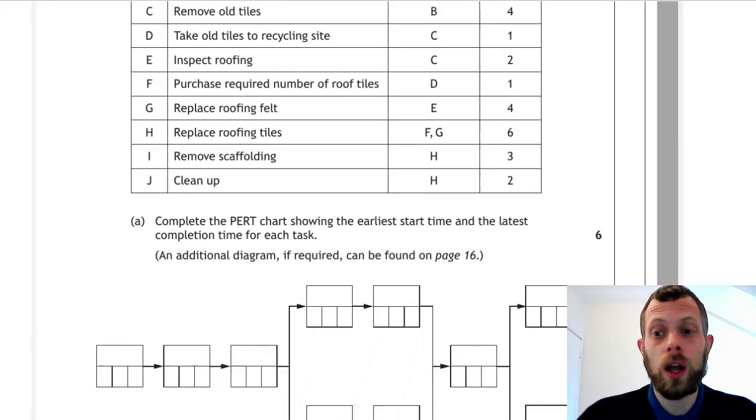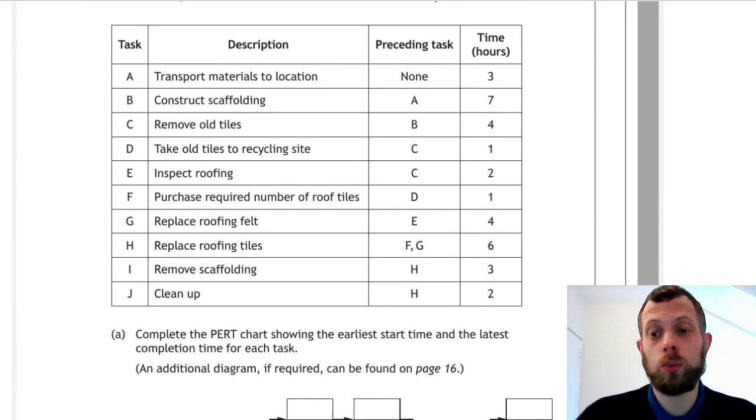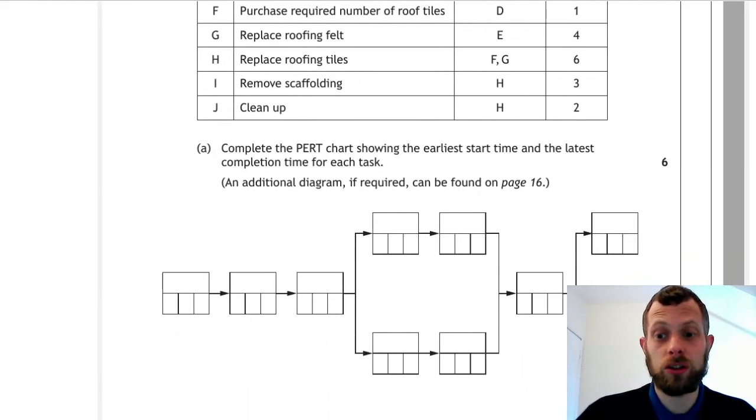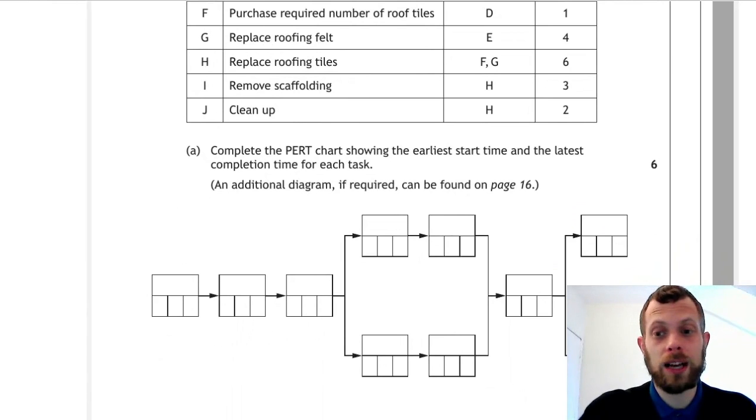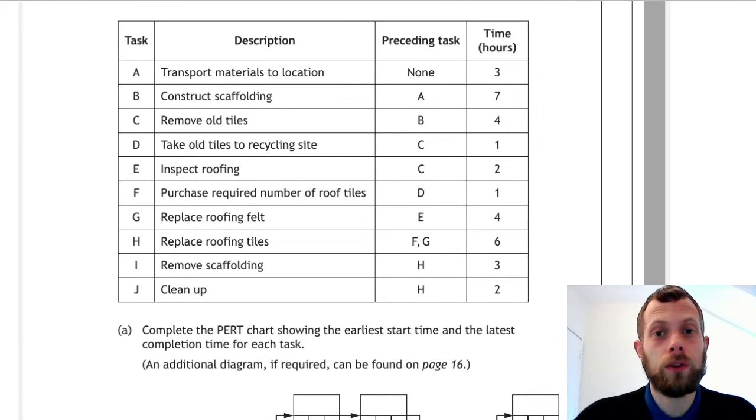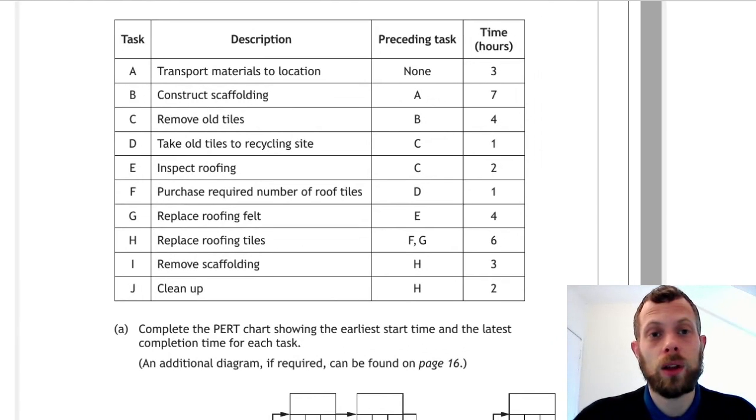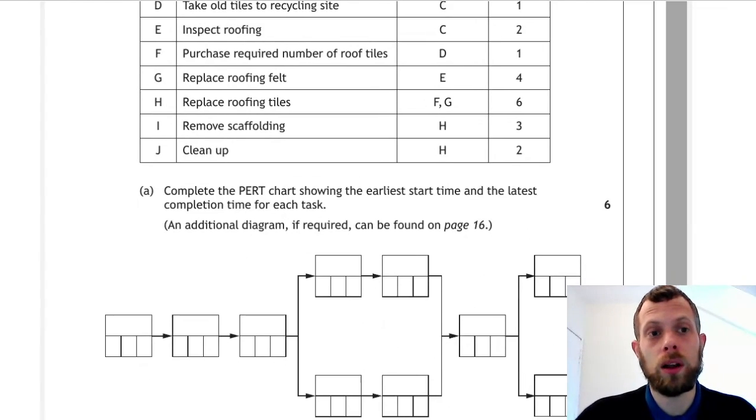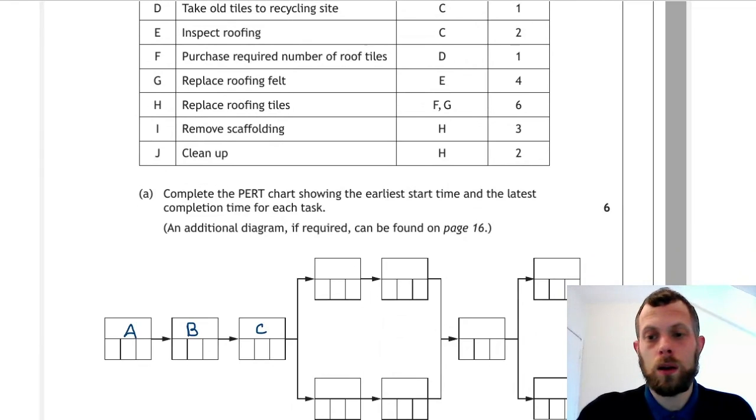The first thing to do is to decide which task goes in which box. This is like the precedence tables that you did at National Five applications of maths. Our first task is task A and that has no tasks coming before it. That's followed by B which depends on A, and C depends on B.